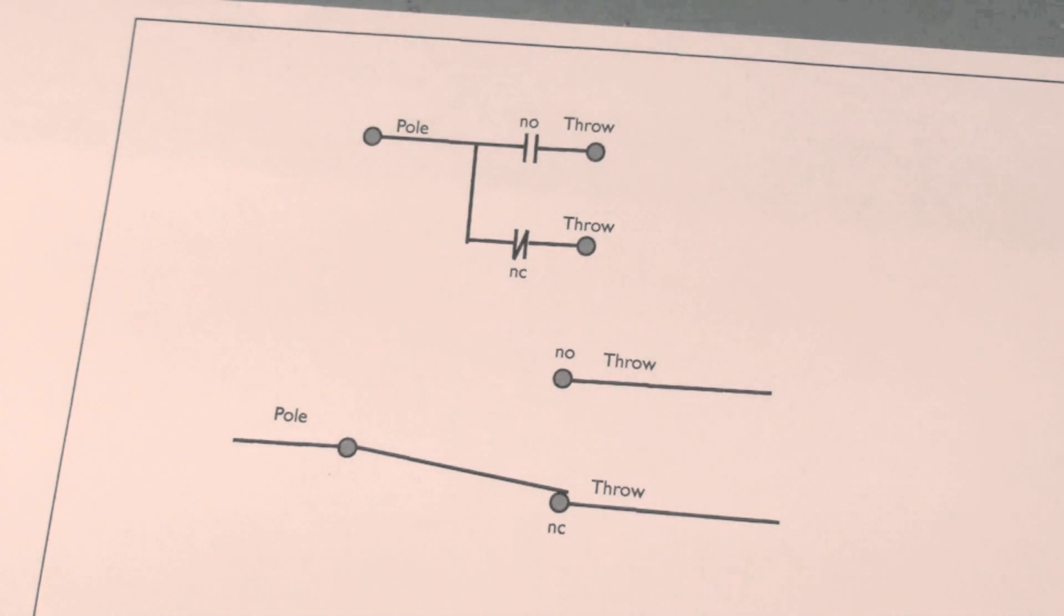A single pole double throw switch is kind of an either/or switch. It can't pass power two ways at the same time. It has to either be in one position or in the other, so it's an either/or switch.